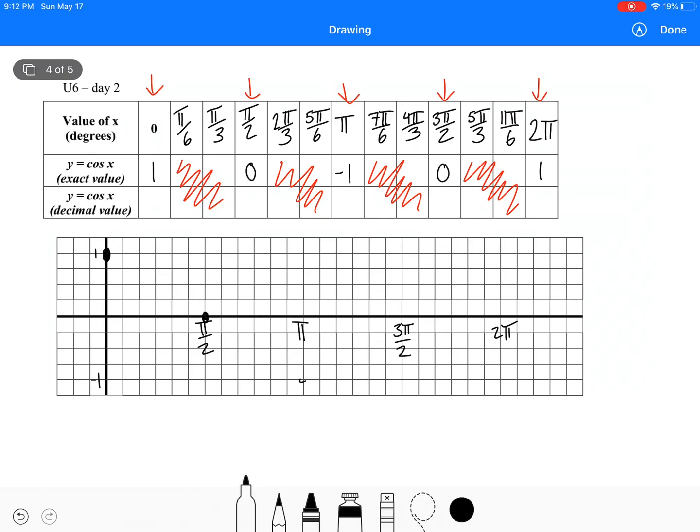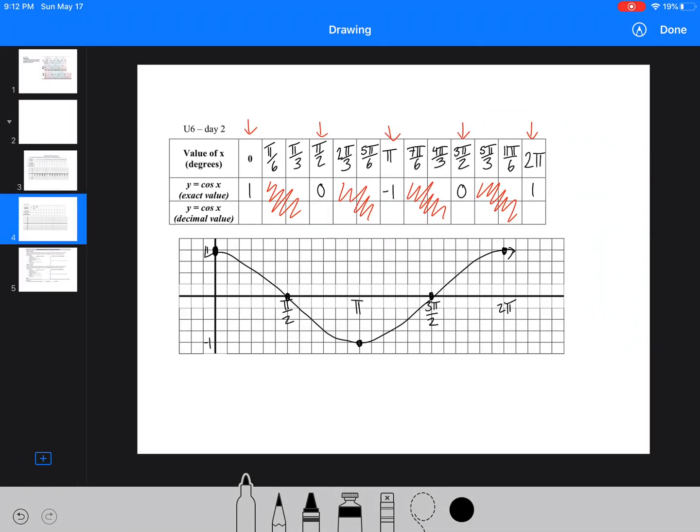And you'll notice that it's actually the exact same graph that we just had. All we've done is we've moved over just slightly. We've actually moved over pi by 2.